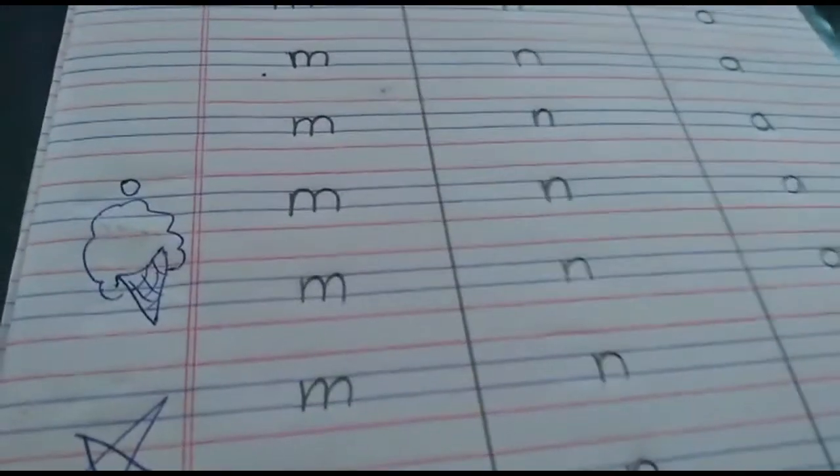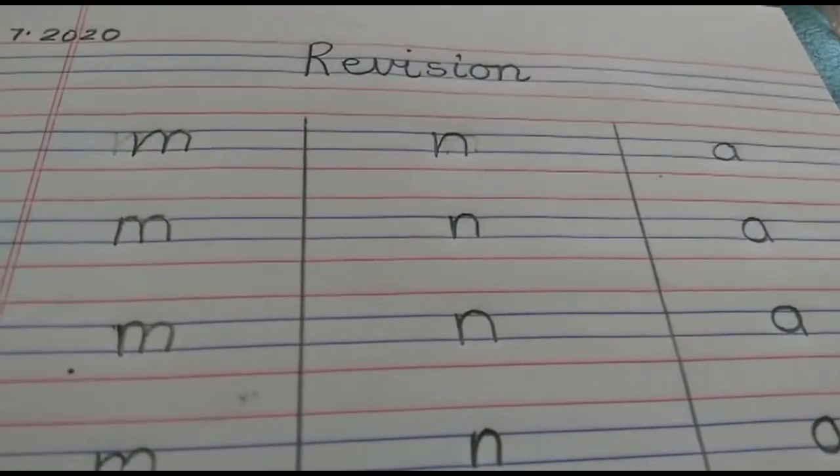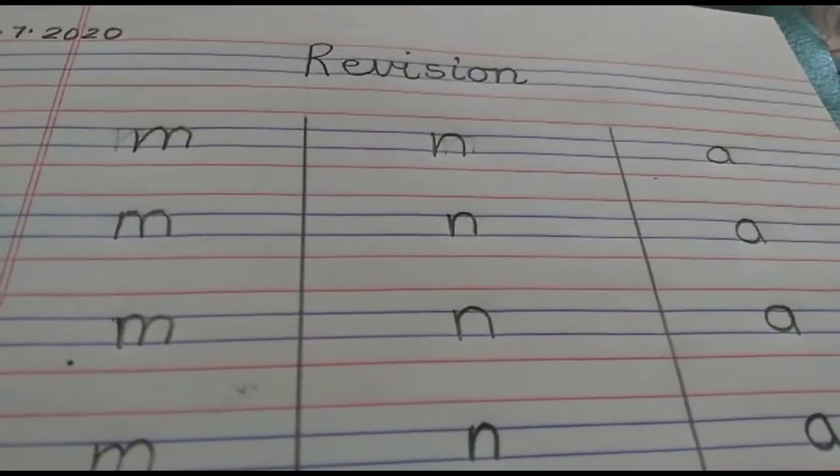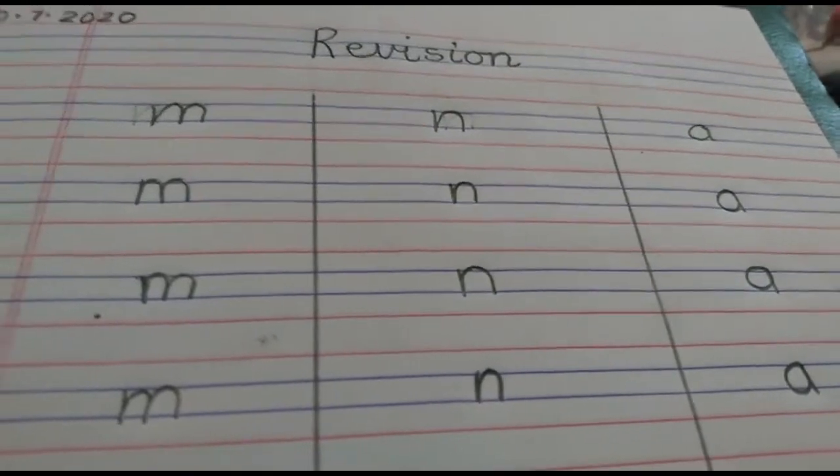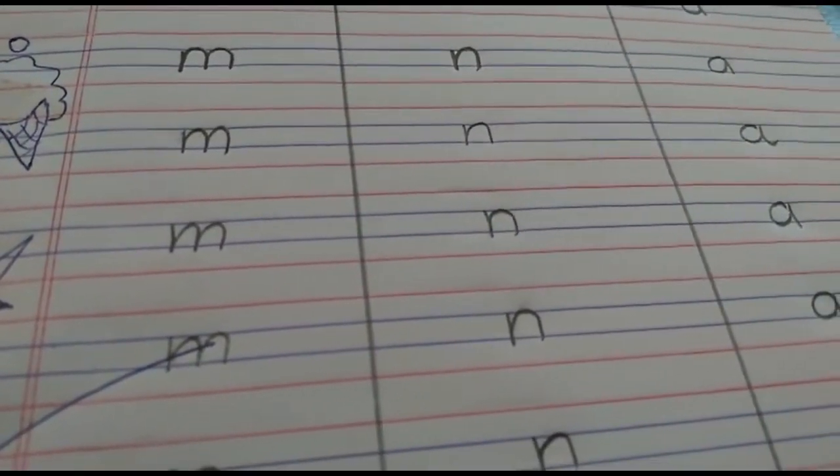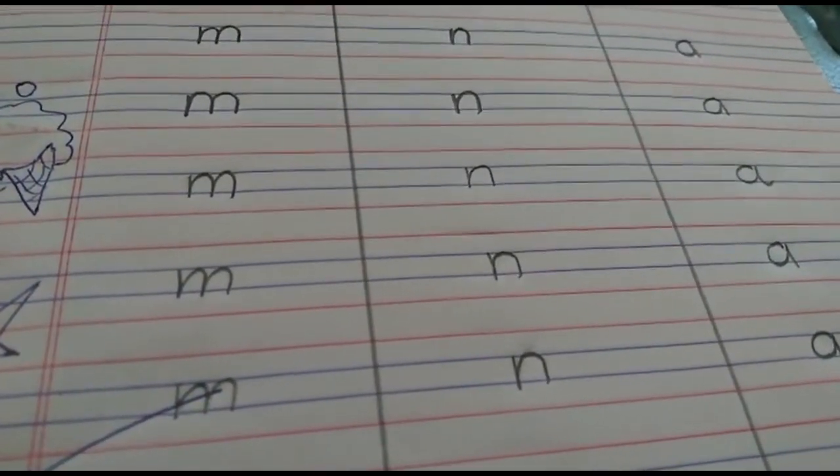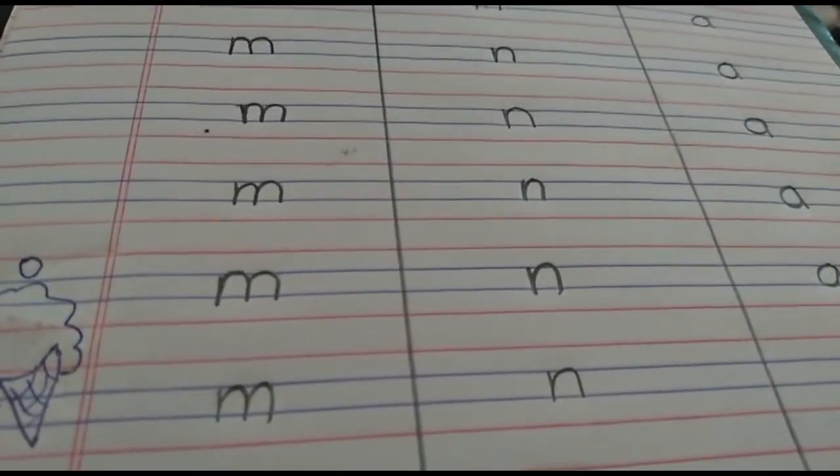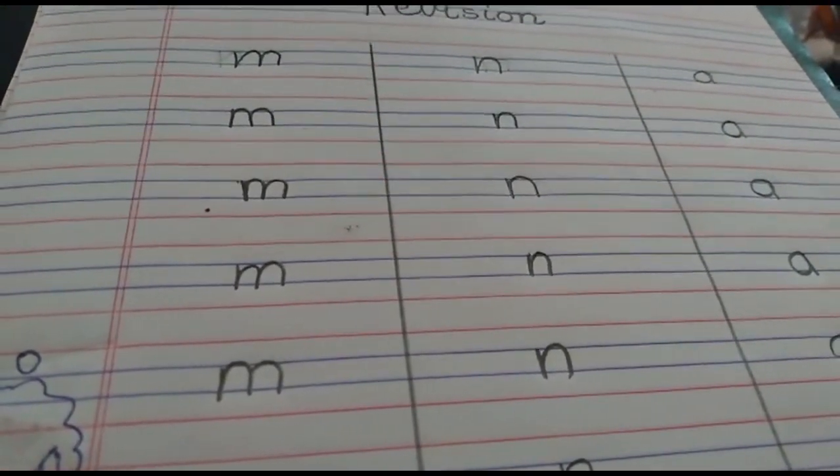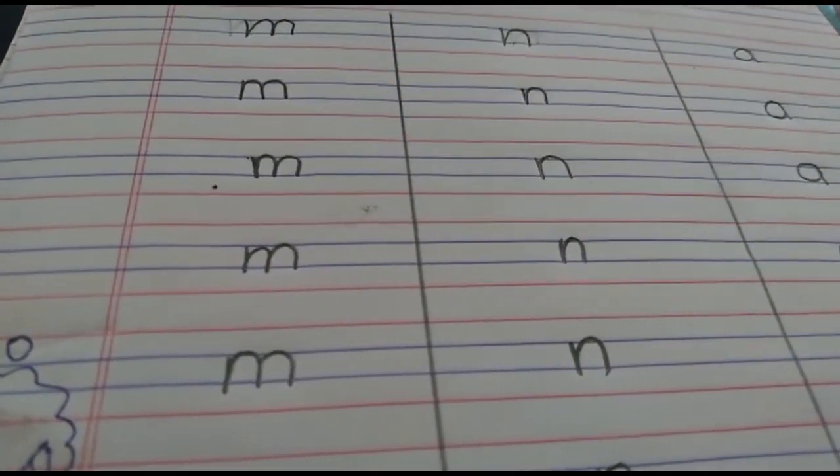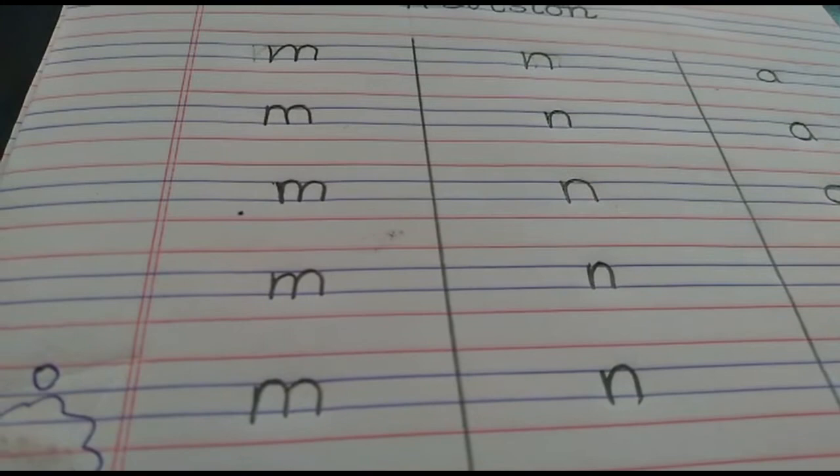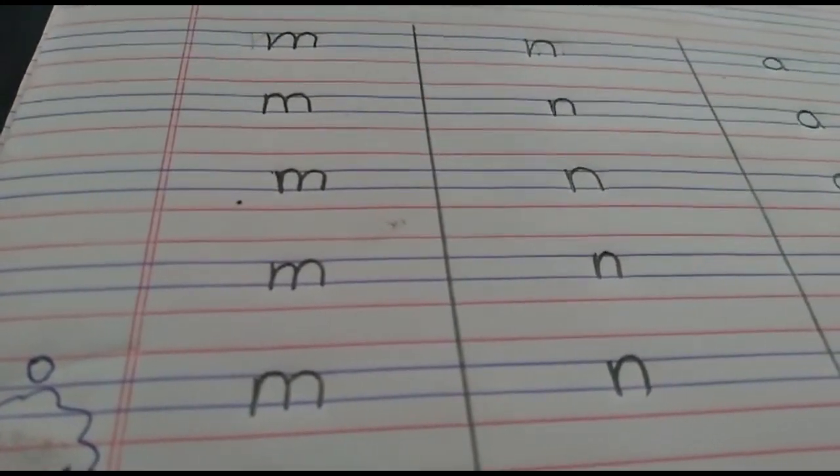So you're going to complete your revision of letter M, N, and A very neatly. And children, also we are not going to use the eraser. Can you see teacher has written but she has not used the eraser? So children, please complete your home fun activity, and I hope you have understood how to write letter M, N, and A. Until we meet again, complete your home fun activity and stay safe and healthy. Bye children.